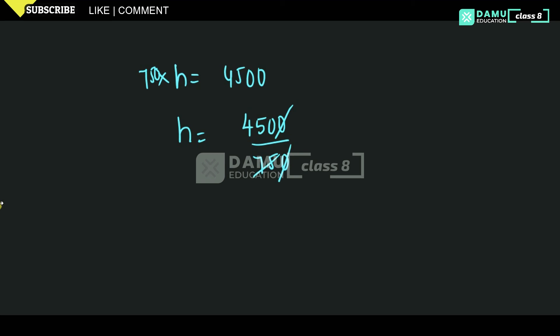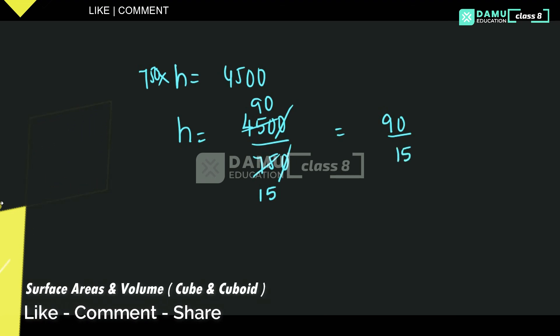The zeros cancel. Dividing by 5 repeatedly: we get 90 divided by 15. 15 sixes are 90, so H equals 6 centimeters.